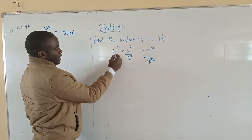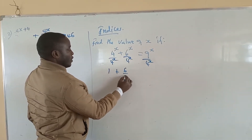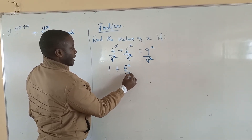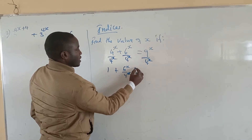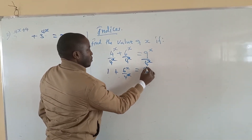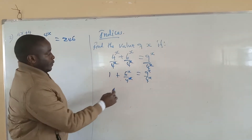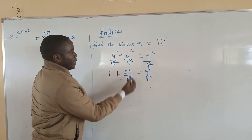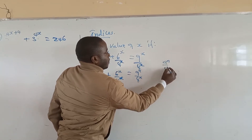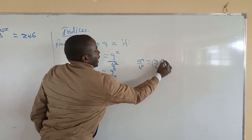When you divide, the first term cancels and you remain with 1 plus — this is 6 over 4, to the power x — which equals 9 over 4 to the power x. Now at this level, we understand that (a/b) to the power n is the same as a over b to the power n.